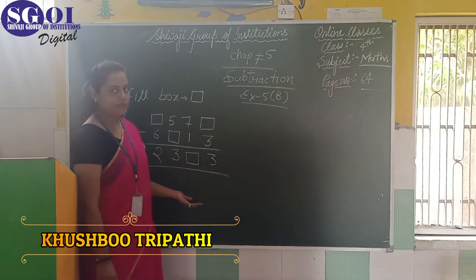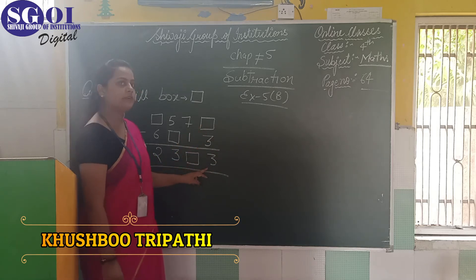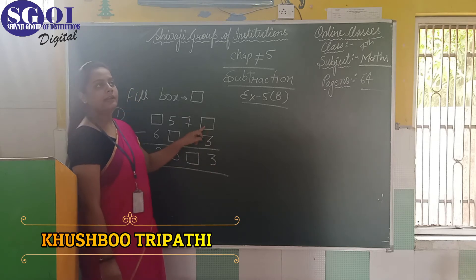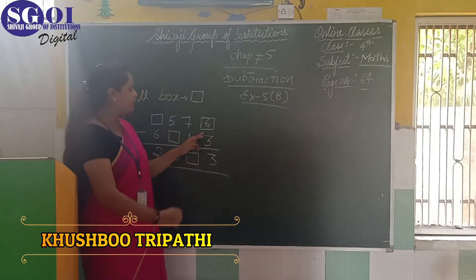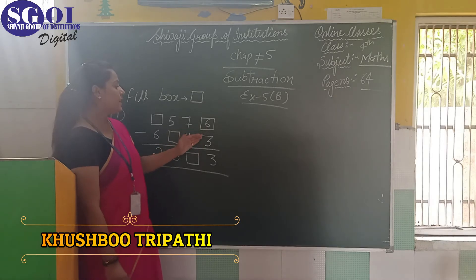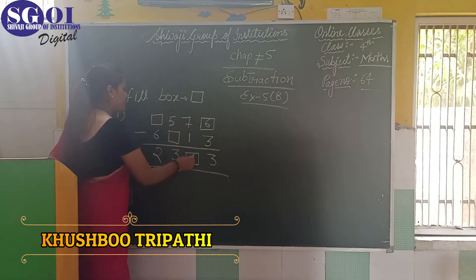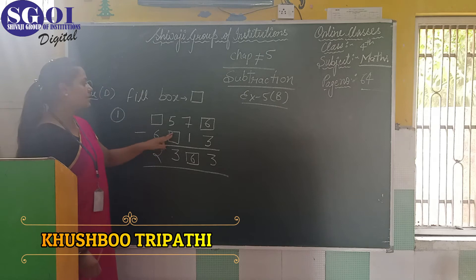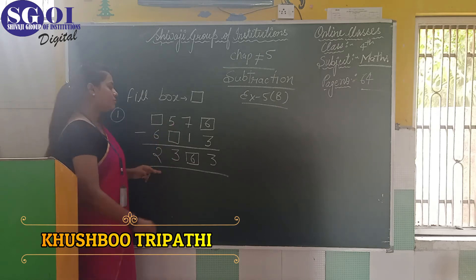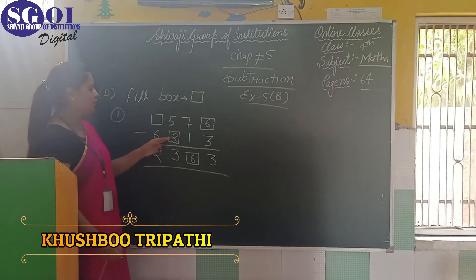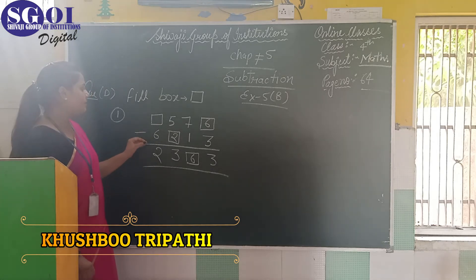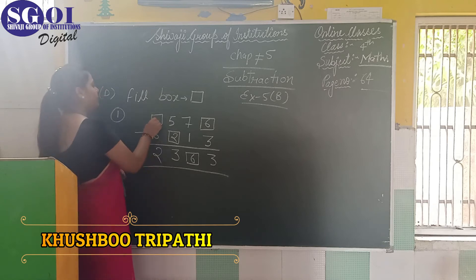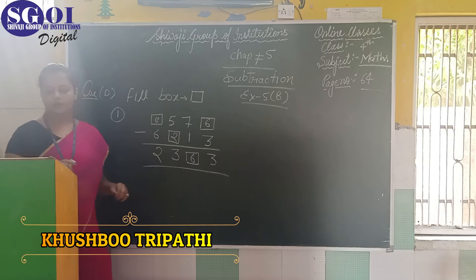We start from the right side. We are getting 3 here, so there must be a number from which we subtract 3 to get 3. That number is 6. Subtract 3 from 6, you get 3. Now subtract 1 from 7, you get 6. There is a number from which we subtract 5 to get 3 — that number is 2. Subtract 2 from 5, you get 3. Now there is a number from which subtracting 6 gives 2, so that number is 8. Subtract 6 from 8, you get 2.